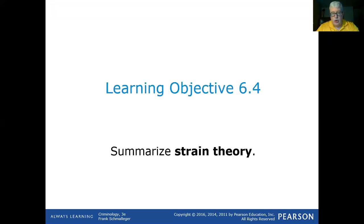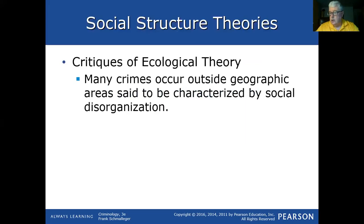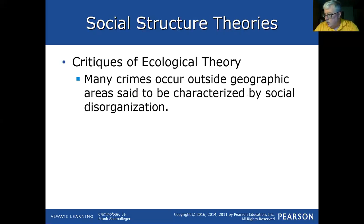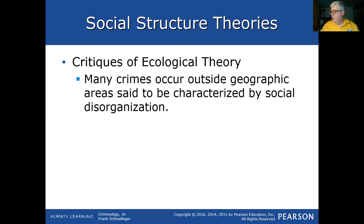That concludes our segment on social structure theories. We talked about broken windows theory, social disorganization and the breakdown of society's institutions as potential causes of crime, and the critiques of those theories. Please review that particular section in your textbook — you should do this beforehand. When we come back for video number three, we'll be looking at strain theory, which includes an interesting chart explaining the five different types of responses that people have in strain situations. See you next time.